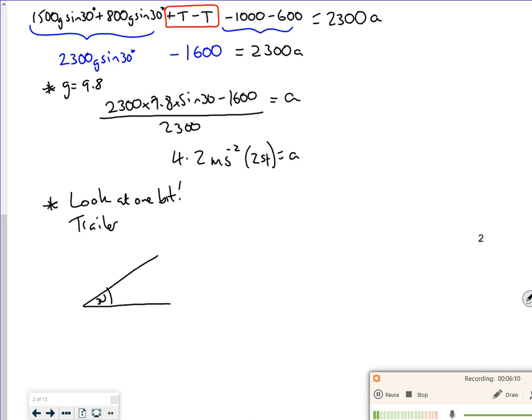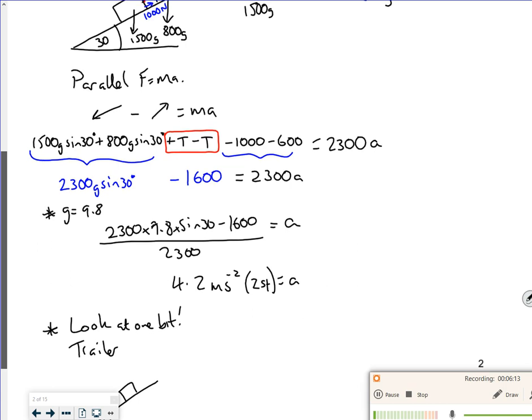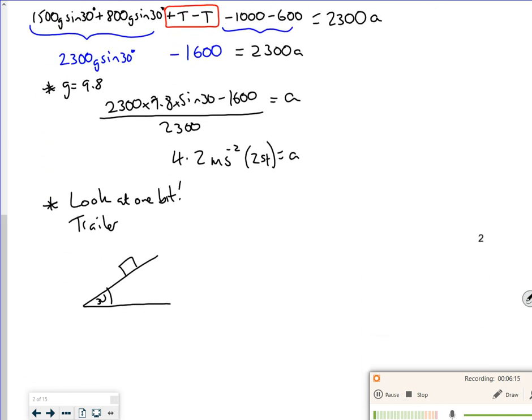So there's my 30. There's my trailer. It was 800 and 600. So 800g, 600 newtons, tension. It's got an acceleration of 4.2. There. So I can set it up counter. There's my 800g and my 30. My 800g cos 30. My 800g sine 30.